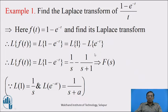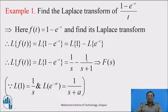Using the linear property, Laplace Transform of f(t) equals Laplace Transform of 1 minus Laplace Transform of e^(-t), which equals 1/s minus 1/(s+1). This uses the formula: Laplace Transform of e^(-at) equals 1/(s+a). This result is denoted by F(s).